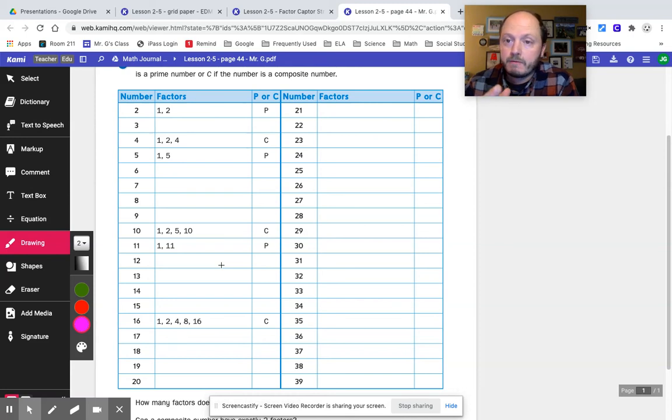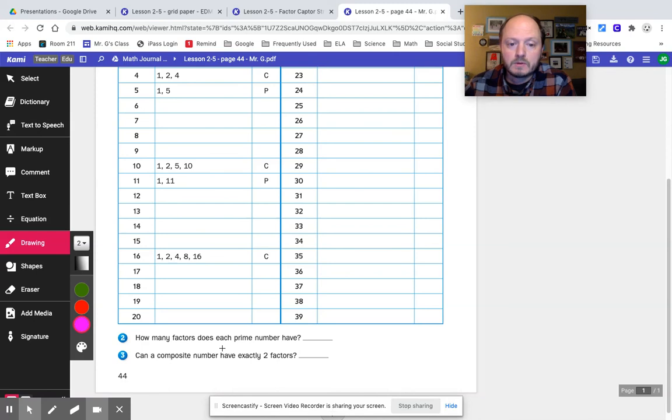And our goal is to try to find additional prime numbers. And it says right here, how many factors does each prime number have? You should probably be able to answer that already. And then, can a composite number have exactly two factors? I think you could probably answer that already. But, let's work hard on completing this table for our class. All right, that is what our homework is going to be so that you are prepared for our next class.